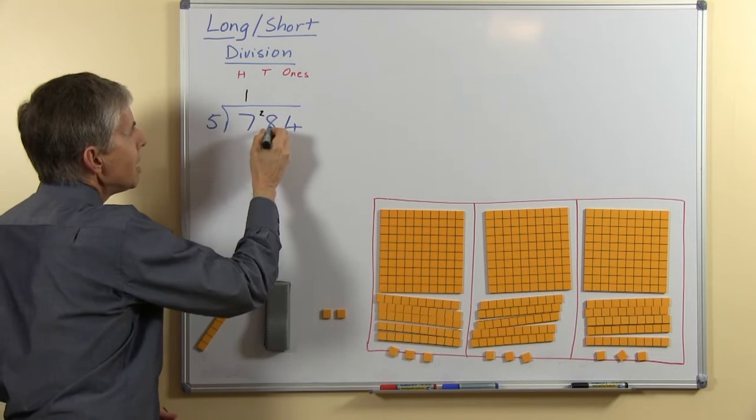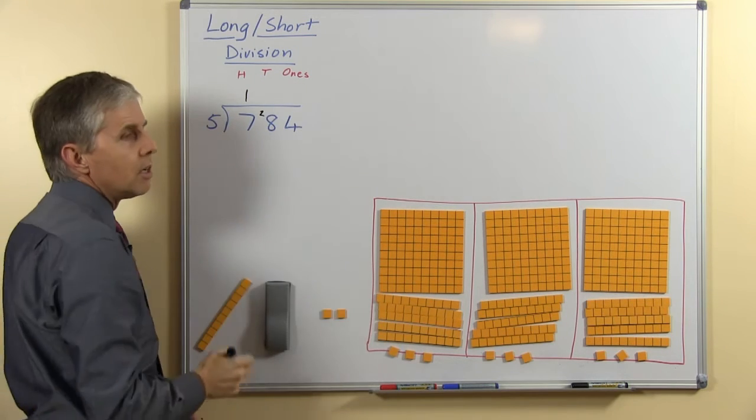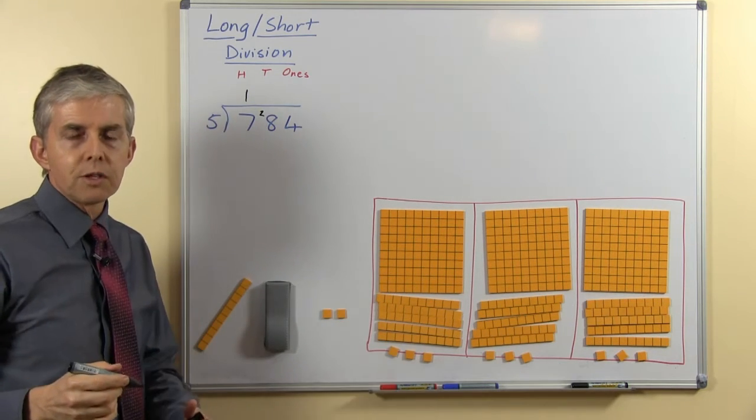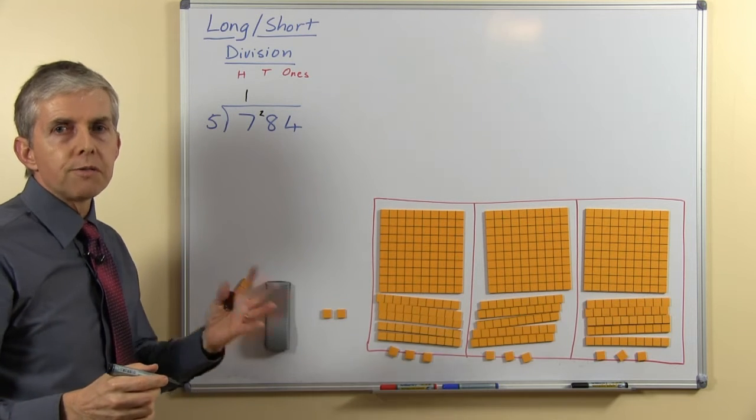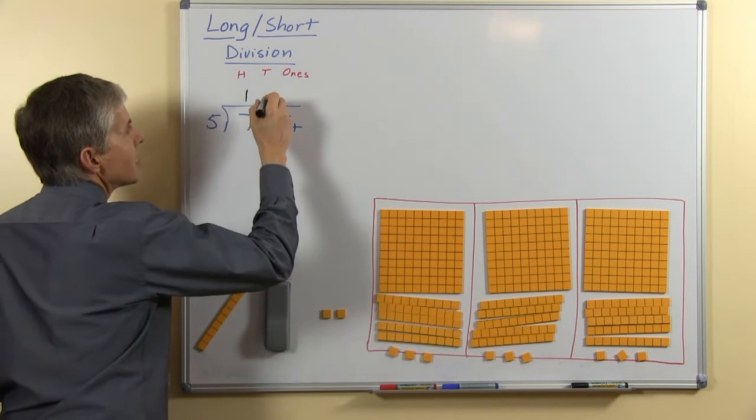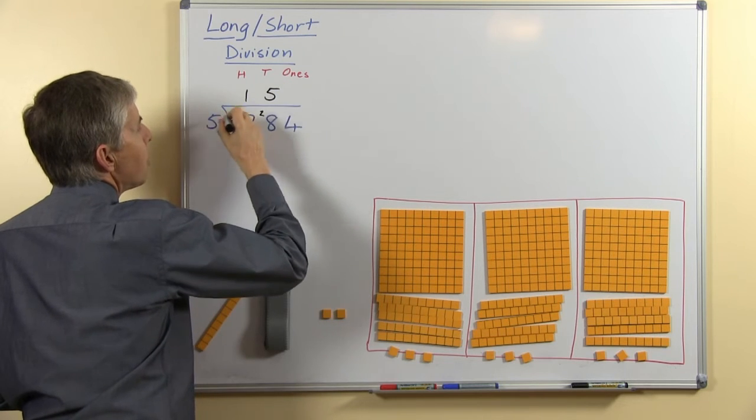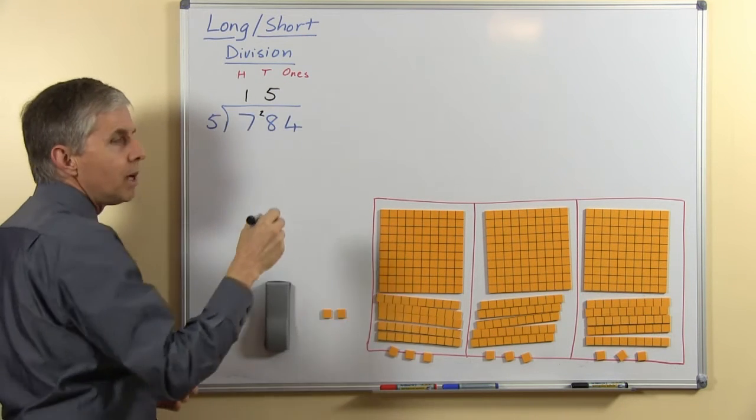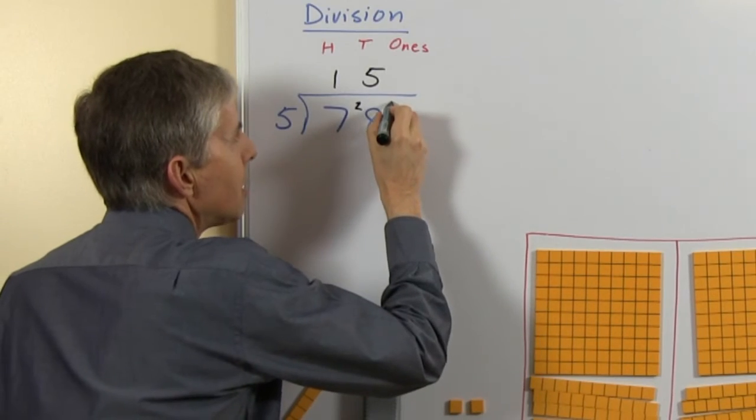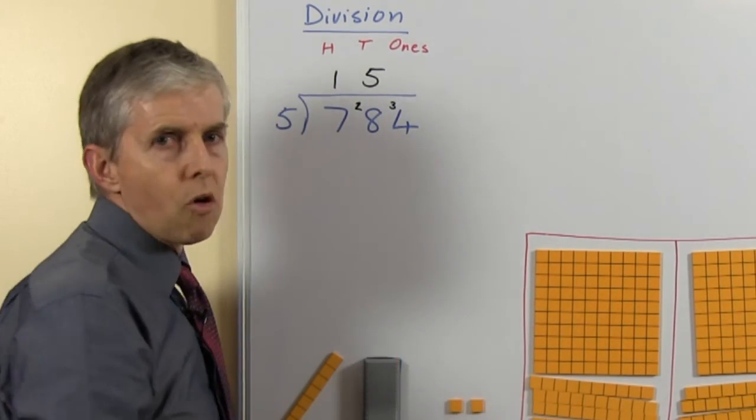Now we look at 28, this is tens, 28 tens shared among 5, think of your 5 times table, 5 fives are 25, which is less than that so we can have 5 here, everybody gets 5 tens, 5 fives are 25, there will be 3 left. So again we put a little number, we put a 3 next to the 4.